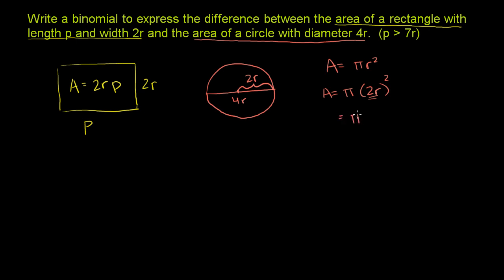So this is going to be equal to pi times 4 times r squared. I'm just squaring each of these terms. Or if we were to change the order, the area of the circle is equal to 4 pi r squared.